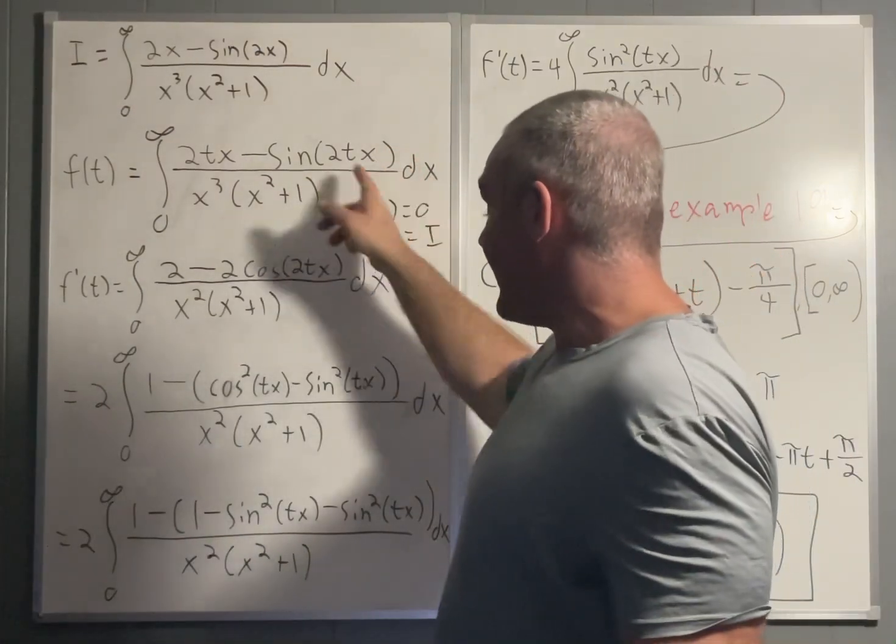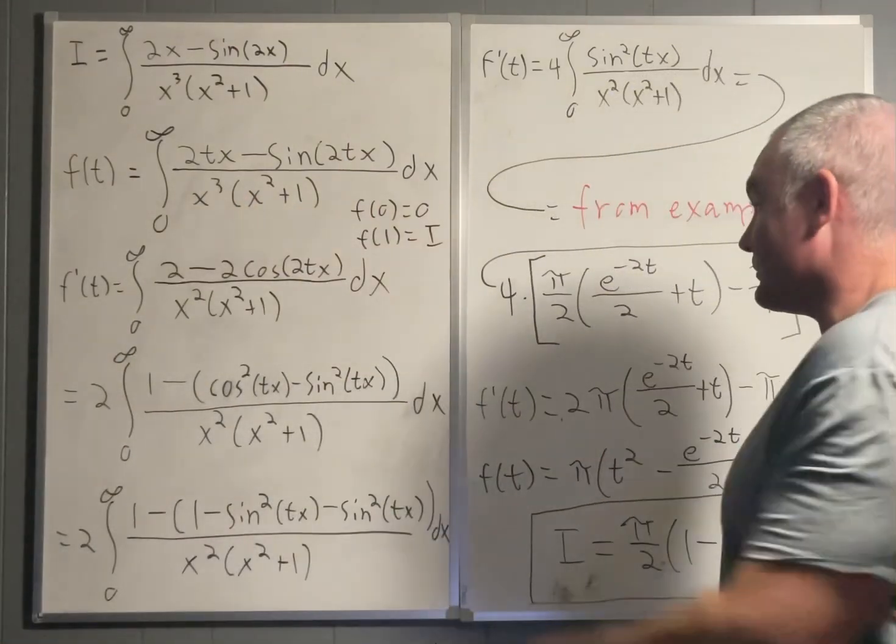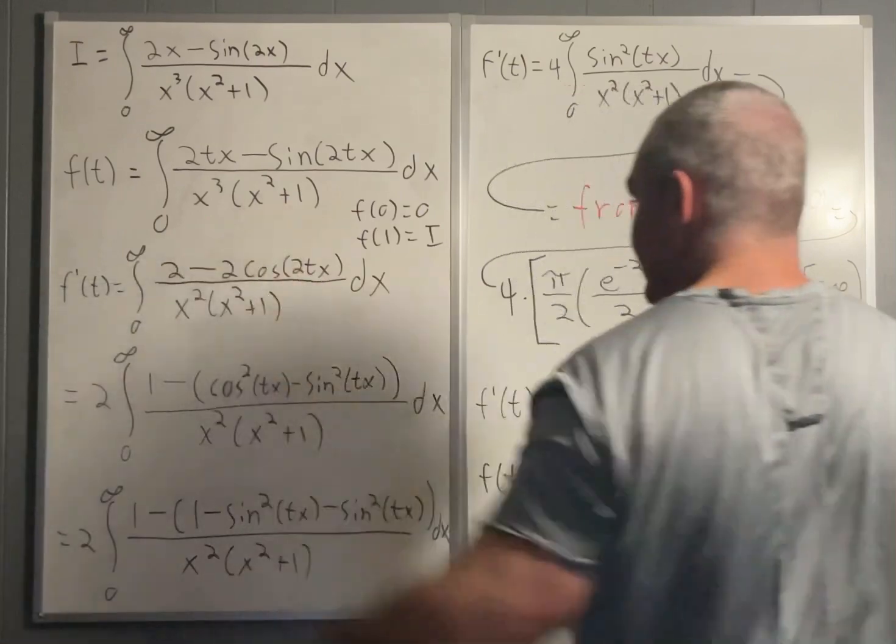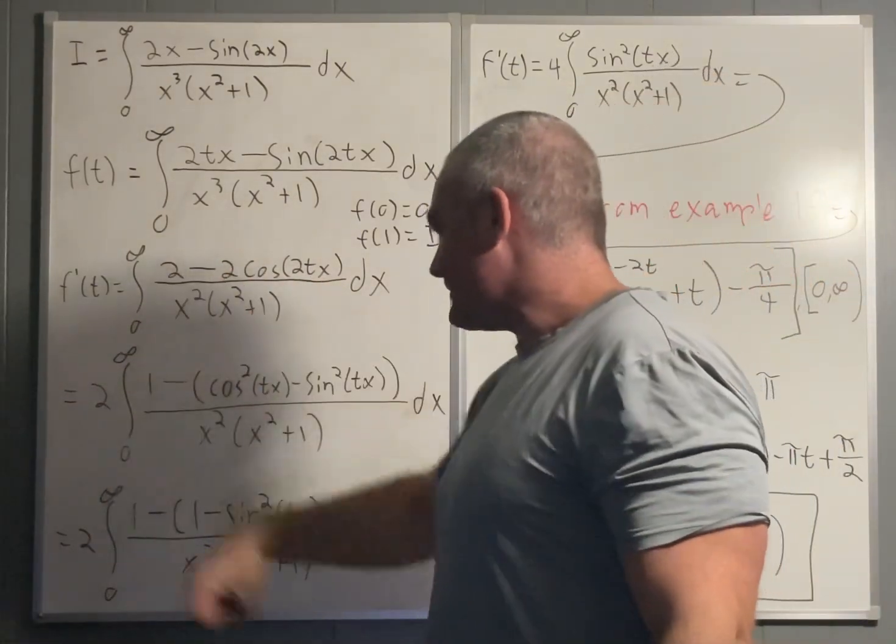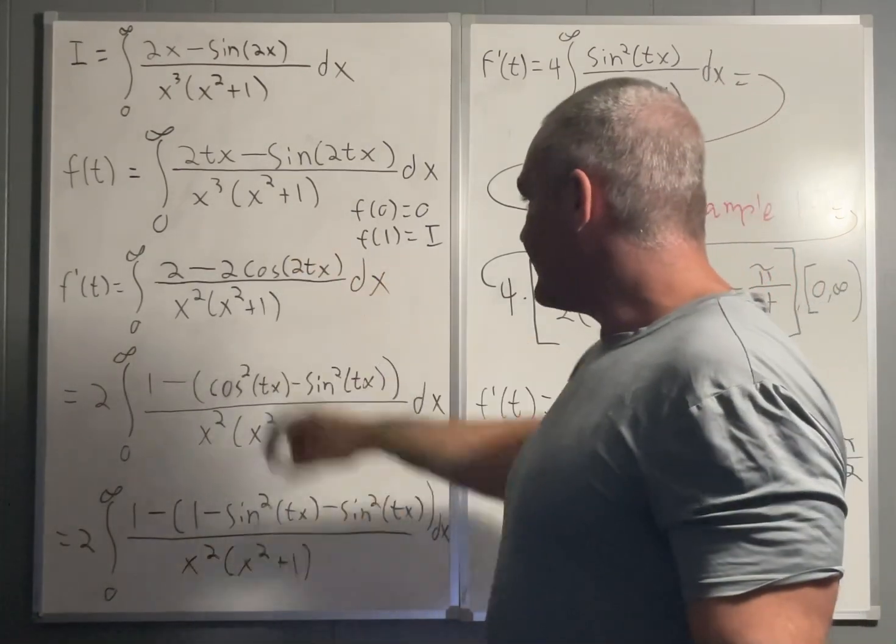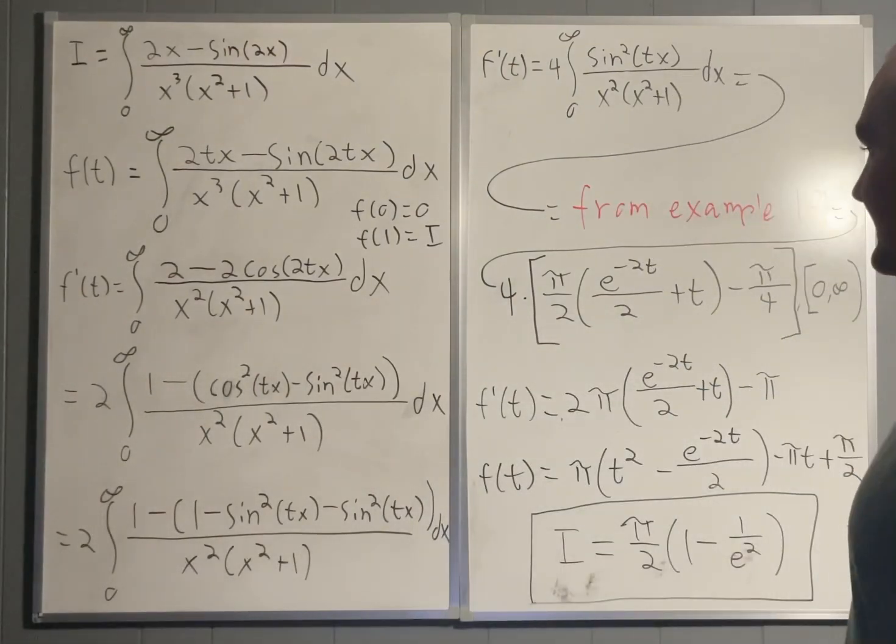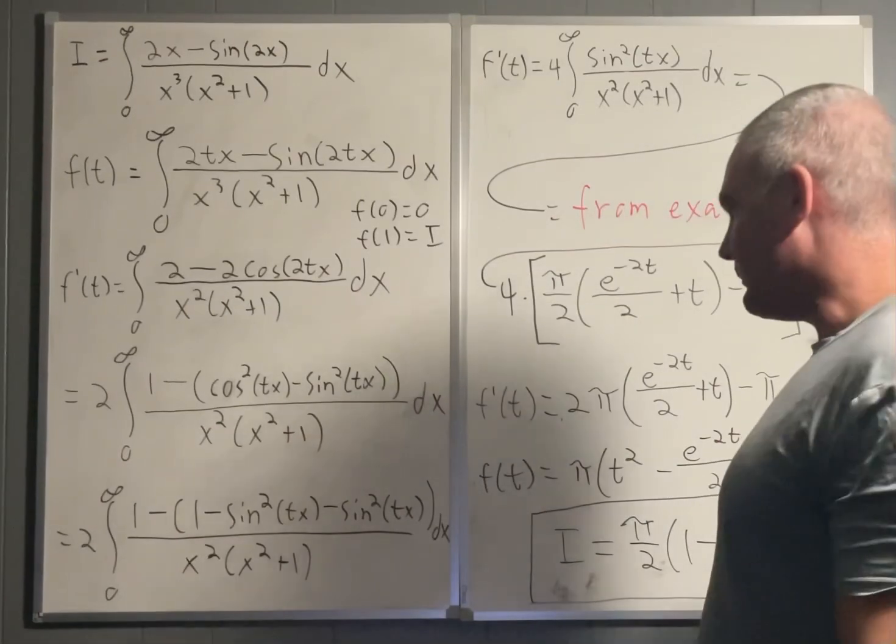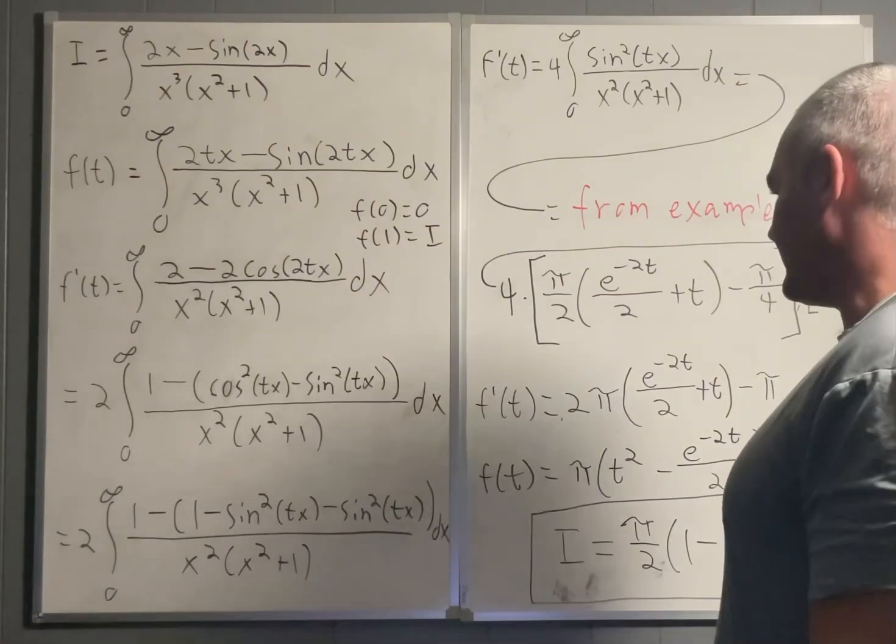And then you could factor out the x's and use it to cancel one of the x's in the denominator, which is what I did in this step. The next step is I factored the 2 outside the integral, and then rewrote cosine 2tx as cosine squared tx minus sine squared tx, using I think it's called the double angle formula or something like that, or maybe a reversal of the double angle formula.